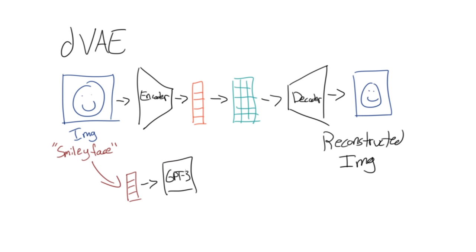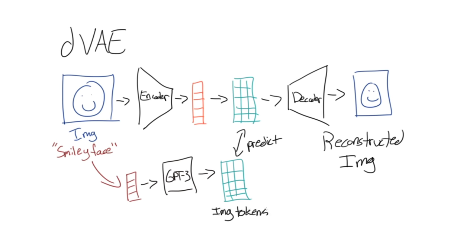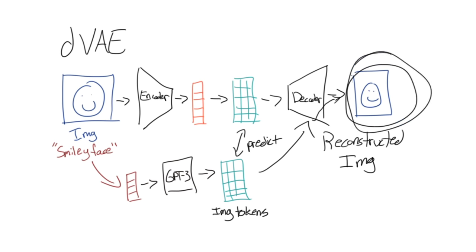When I say training auto-regressively, that essentially just means the model is predicting its own inputs. In this case, that might mean that the image tokens are masked out — the model can't see them — and then the model would have to predict them starting from just the text tokens. That process can be used to generate the image tokens, but we still need to go from image tokens to an actual image. They get images by passing the predicted image tokens through the original DVAE encoder, doing that for 512 images and then choosing the best one based on some separate contrastive learning model.